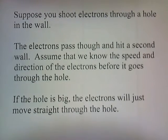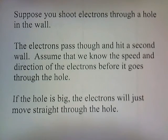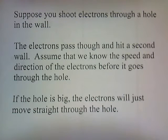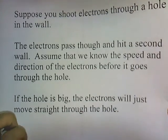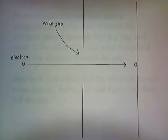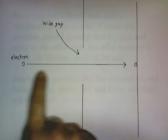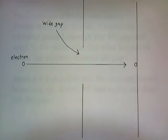Suppose you shoot electrons through a hole in the wall. The electrons pass through and hit a second wall. We're going to assume that we know the speed and direction of the electrons before they go through that hole. If the hole is big, the electrons will just move straight through the hole. Here's our picture: we've got our electron moving through a big hole in the wall, and then it hits a second wall.